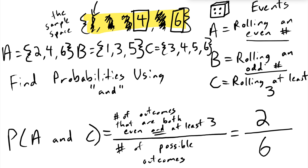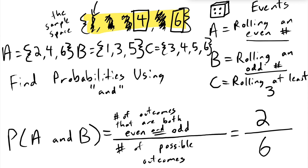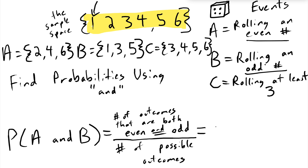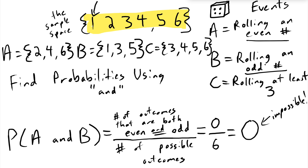What about A and B? The probability of A and B requires counting outcomes that are both even and odd. There are no numbers that can be both even and odd — it's not possible. So the probability of A and B is zero over six, which is just zero. It is impossible, which makes sense — there's no way to get a roll that's both even and odd.